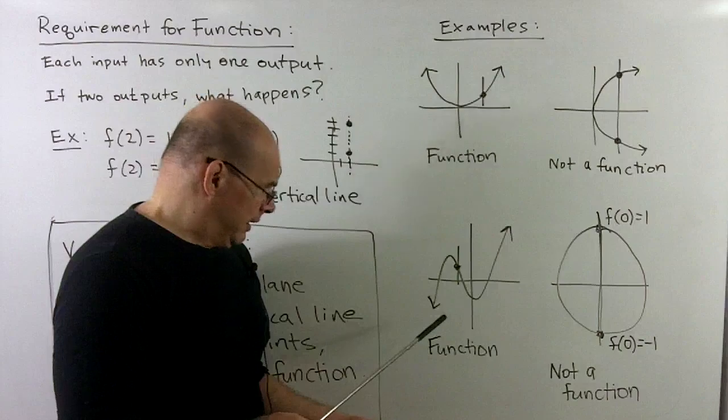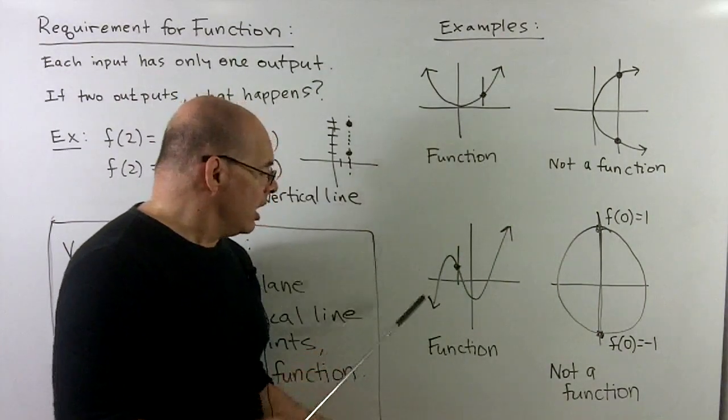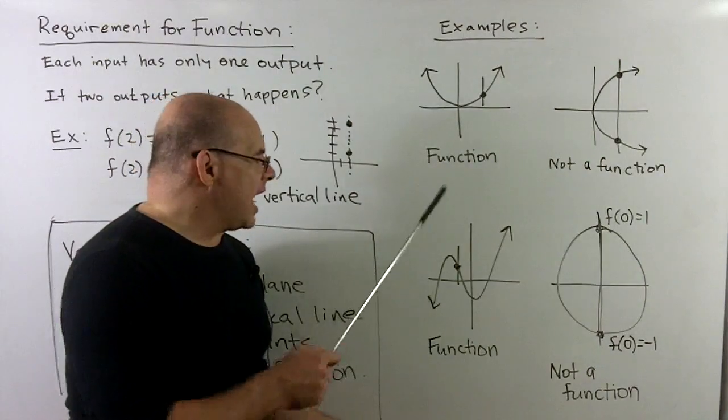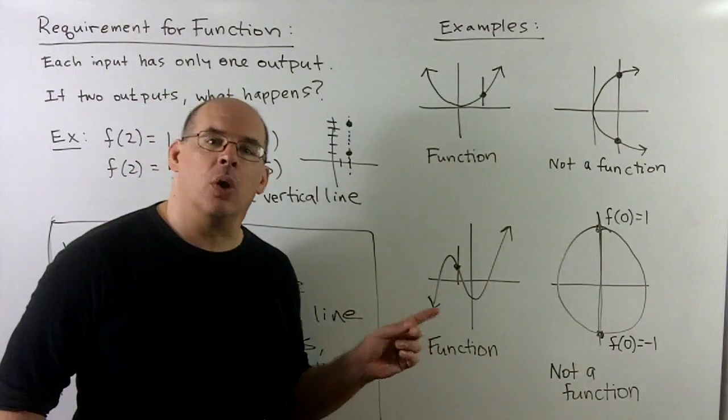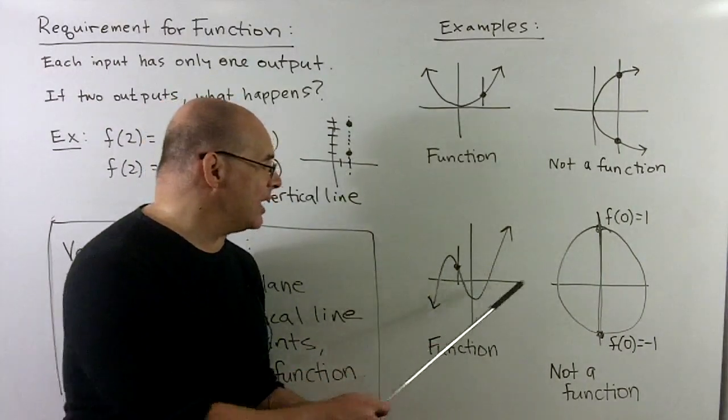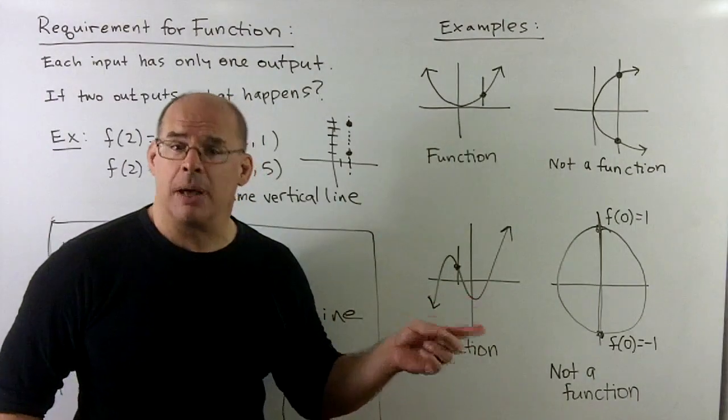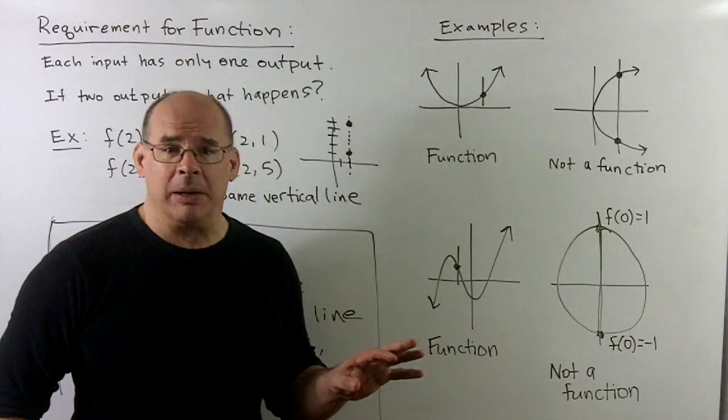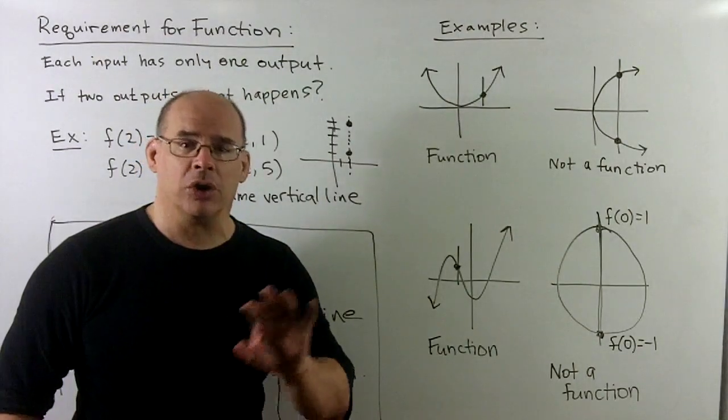If we take this graph here, this has some bending in it. We note vertical lines always cut in one point, so that is a function. This is worth noting. If we put in horizontal lines, they'll cut in more than two points or more in some places. But that's not going to be a problem. Just be careful not to confuse vertical and horizontal.